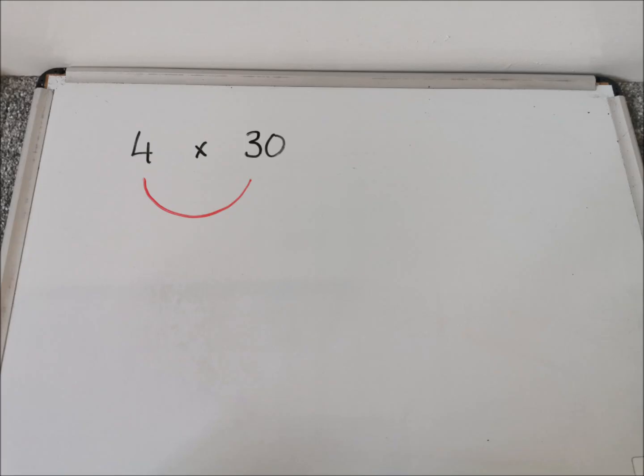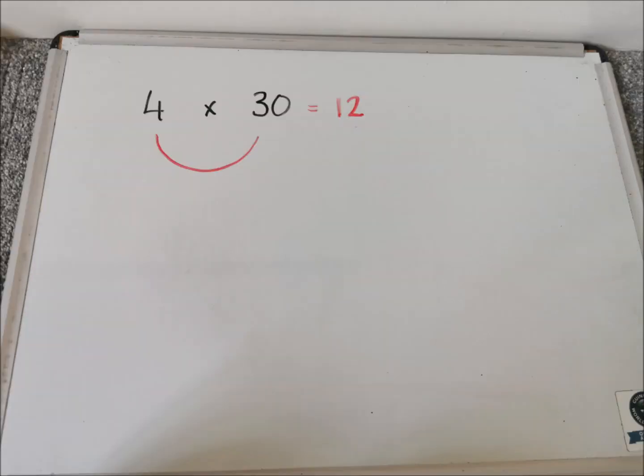So what we do is we draw a smiley face between the two numbers. So you can see I've drawn a smiley face between the 4 and the 3 of the 30. So I do 4 times 3, which I know is 12, so I write that down as my answer.